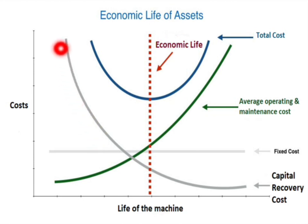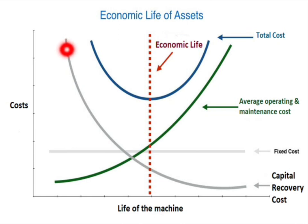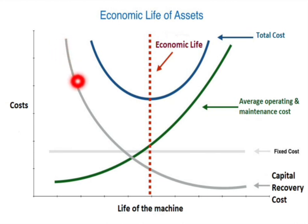Capital recovery means that the selling price of a product includes the capital cost of the machine. At the end of the machine's life, we need money to replace it, which is recovered by selling products produced by the machine. At the initial stage of the machine's life it generates more profit, so more money is recovered. As years progress, the performance of the machine gets reduced, so we are not able to recover as much money — that is why the capital recovery line is initially high and gets reduced after some years.